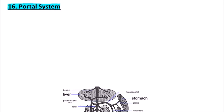Welcome to Studio Biology. In this video we are going to discuss the portal systems in frog. There are two types of portal system in frog: the first one is the renal portal system and another one is the hepatic portal system.